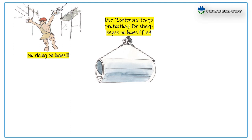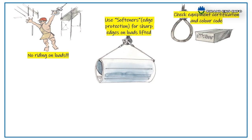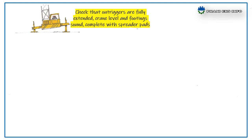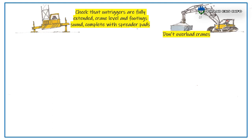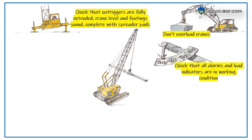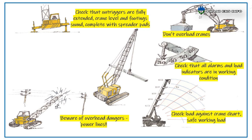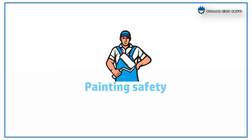Safe lifting: Safety instructions for lifting activity include: no riding on loads; use softeners (edge protection) for sharp objects on sharp edges of loads being lifted; check the equipment certification and color code; check the work permit and rigging study; inspect all equipment before use. Check that outriggers are fully extended, crane is level, and footing is sound — complete with spreader pads. Don't overload cranes. Check that all alarms and load indicators are in working condition. Check load against the crane chart's safe working load. Be aware of overhead dangers such as power lines. Park cranes and vehicles safely.